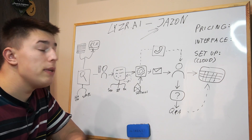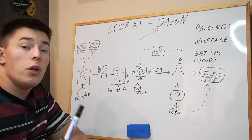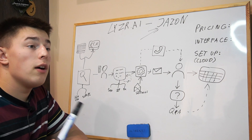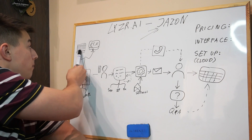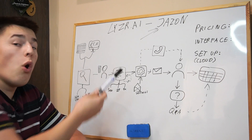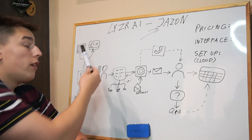Now let me explain how Jason actually works. First, you either upload a lead list to Jason or connect Jason to your CRM.